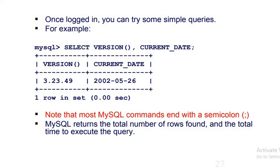We'll see some simple MySQL commands. Try these things: SELECT VERSION() and current date. You can use one SELECT statement or give it in two. Every MySQL command ends with a semicolon. MySQL always returns the total number of rows found and the time to execute the query. You might have observed this in previous sessions.